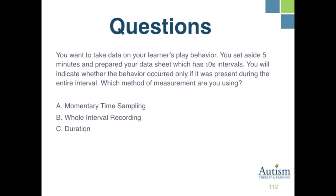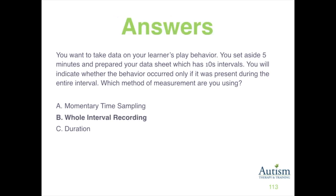You want to take data on the learner's play behavior. You set aside five minutes and prepared your data sheet with 10-second intervals. You will indicate whether the behavior occurred only if it was present during the entire interval. Which method of measurement are you using? A, momentary time sampling; B, whole interval recording; or C, duration? The correct response is B, whole interval recording.